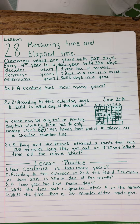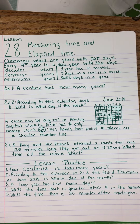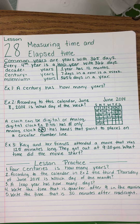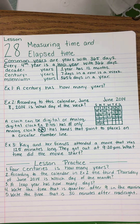We measure the passage of time by the movement of Earth. On Earth, a day is 24 hours, and that's how long it takes the Earth to spin around its axis once. We divide a day into 24 equal parts called hours. Each hour is divided into 60 equal lengths of time called minutes, and each minute is divided into seconds.